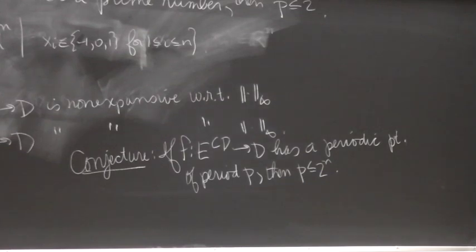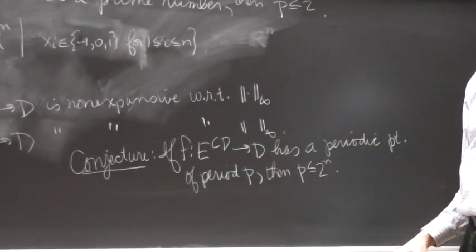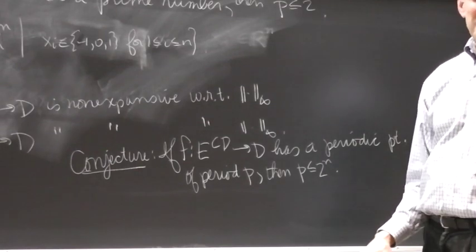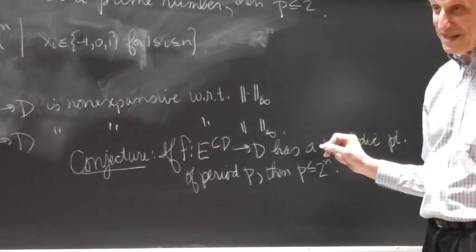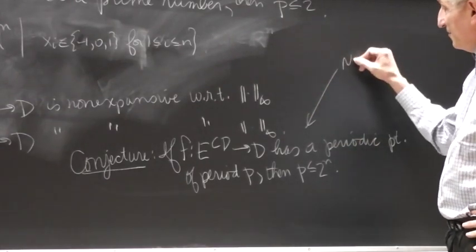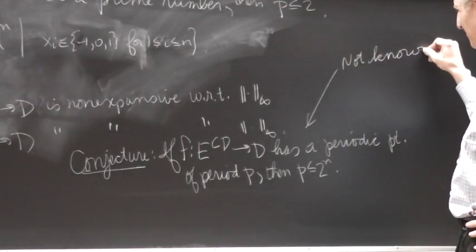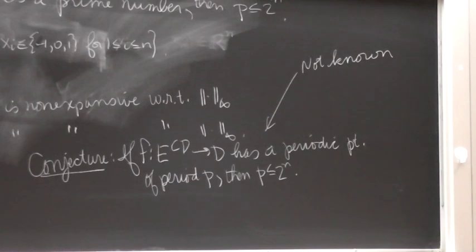This might seem like a very modest conjecture, but it's not known to be true for n equals 4 or n equals 5. So I pose this as something for people who are serious about using the computer, but I have to warn you it's a finite problem. It's a finite problem, but it's a very large finite problem when you start sitting down and looking at it carefully. It's not even known. But this argument at the top board...